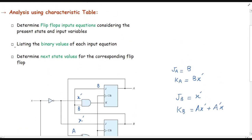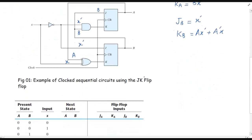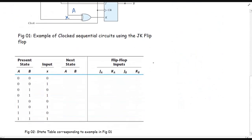The second step is listing the binary values of each input equation. To list the binary values we need to look at the present state and the present inputs. Coming towards the state table, given the values of A, B, and x, we need to determine J_A, K_A, J_B, and K_B.